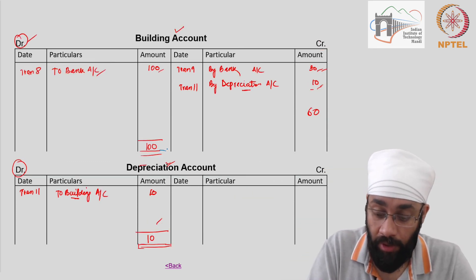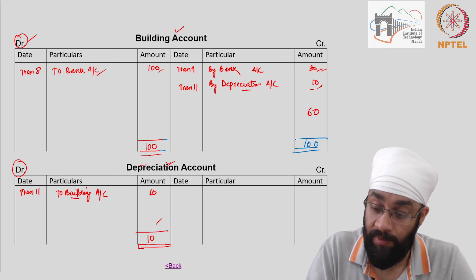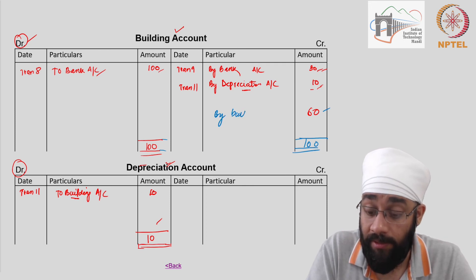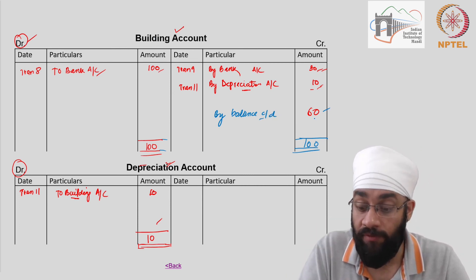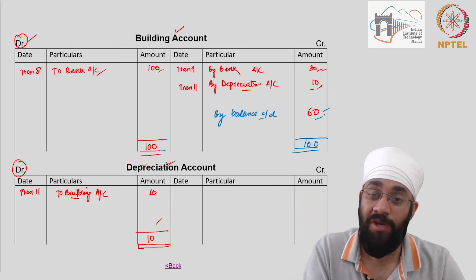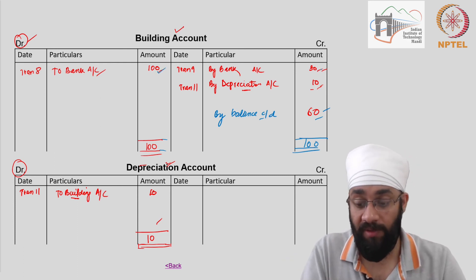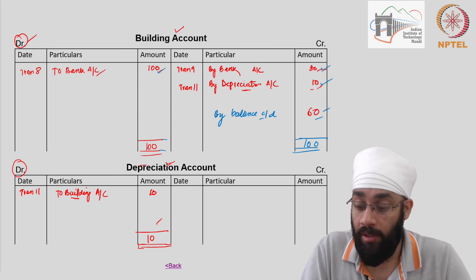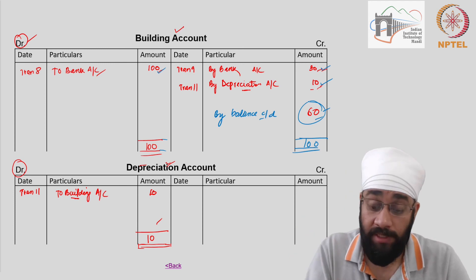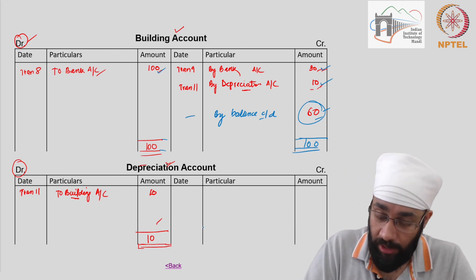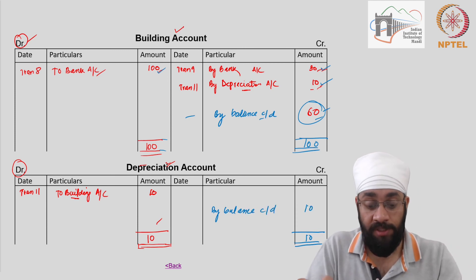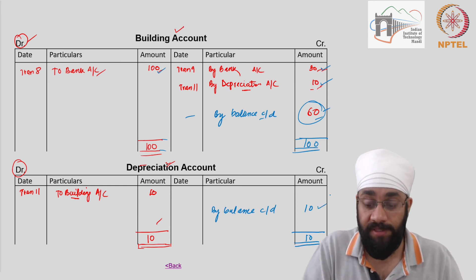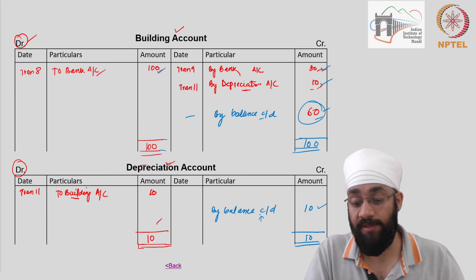The building account has 100 total on the debit side. In the previous video we wrote 60 here as the balance, and write 'by balance carried down.' This means the business is carrying a balance of 60 in the building — this is the book value of the building after the 14 transactions. There was 100 rupees worth of building bought, but building worth 30 was sold, and the value went down by 10 due to wear and tear, so the value left is 60. For the depreciation account, the balance carried down is 10 — this means the business has incurred a depreciation expense of 10 during the year.